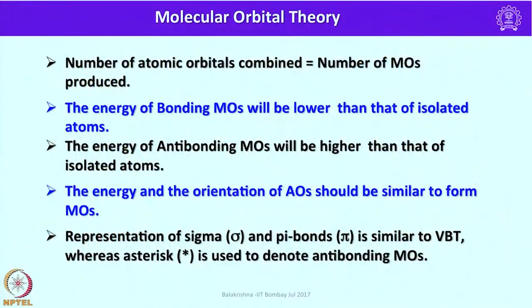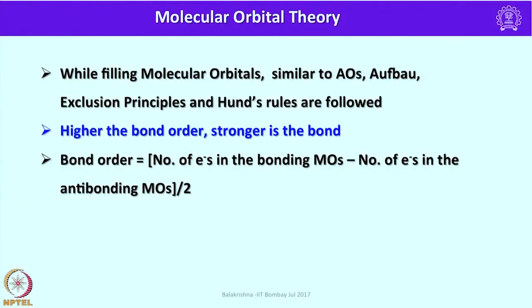The representation of sigma and pi bonding is very similar to valence bond theory. In molecular orbital theory we use an asterisk — a star — to denote antibonding molecular orbitals. For example, sigma represents a bonding orbital and sigma star or pi star represents antibonding molecular orbitals. While filling molecular orbitals, the same rules as for atomic orbitals are strictly followed — the Pauli exclusion principle and Hund's rules apply when filling molecular orbitals with electrons from both combining atoms.